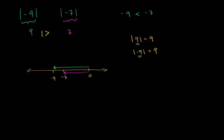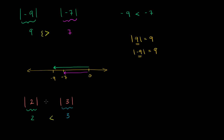Let's do a few more of these. Let's compare the absolute value of 2 to the absolute value of 3. The absolute value of a positive number is just that same value. 2 is 2 to the right of 0, so this evaluates to 2. The absolute value of 3 evaluates to 3. So 2 is clearly the smaller number — the absolute value of 2 is less than the absolute value of 3.